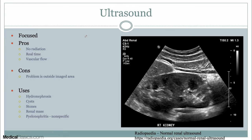Ultrasound is going to be one of your more common ways to evaluate for any type of renal abnormality. Typically, you're going to be evaluating both the kidneys and the bladder. The benefits are that it's quite a focused exam, so you really have to know that you have a renal issue. There's no radiation, there's real-time data, and you also get an evaluation of vascular flow — you're going to be able to see whether or not the arteries potentially have some type of stenosis, thrombus, or any type of elevated velocity.